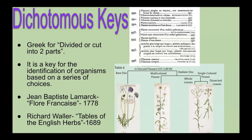Dichotomous is Greek for 'divided or cut into two parts' — 'di' means two. It is a key for the identification of organisms based on a series of choices. Two people are credited with creating the dichotomous key. The first is Jean-Baptiste Lamarck, a French naturalist, who created the first text version of a dichotomous key for botany and microorganisms.